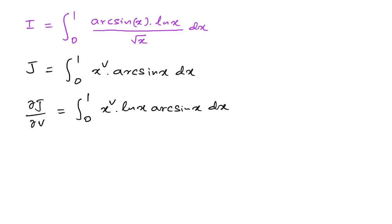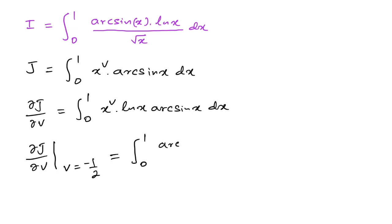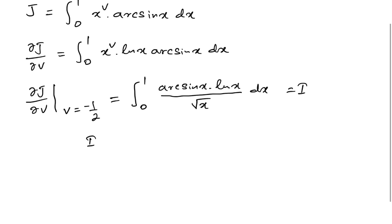If we plug in v = -1/2, the partial derivative of J when v = -1/2 gives us the integral from 0 to 1 of arcsin(x) times natural log(x) times x^(-1/2) dx, which we can write with square root of x in the denominator. So our integral I equals the partial derivative of J with respect to v evaluated at v = -1/2.